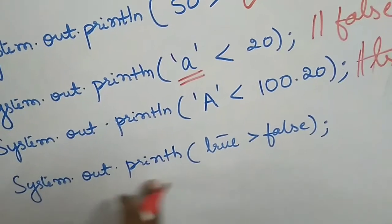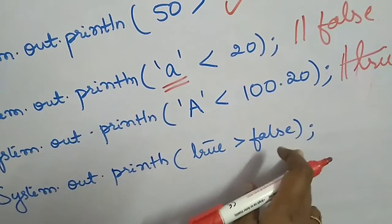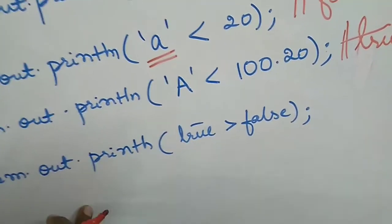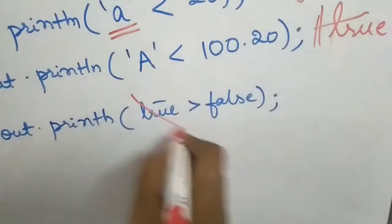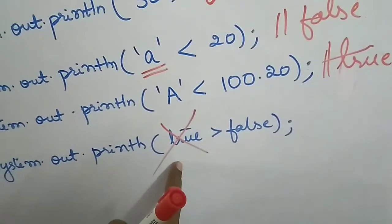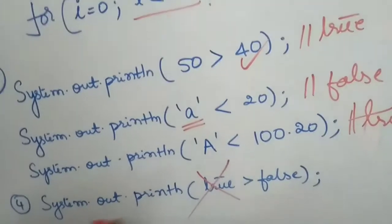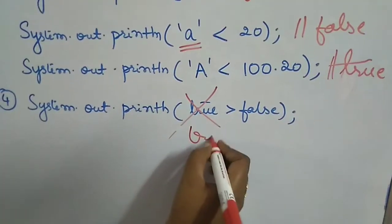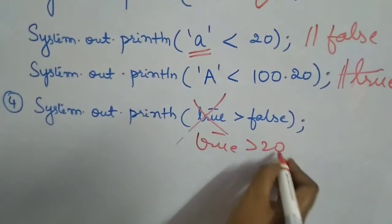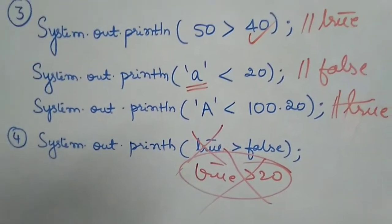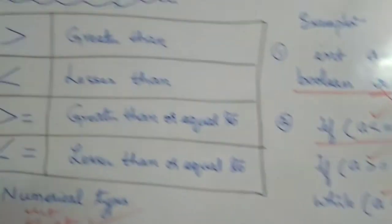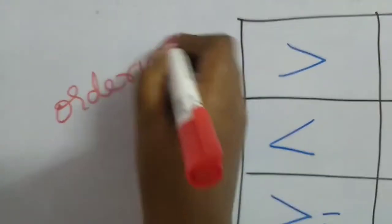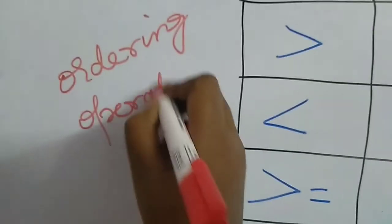System.out.println(true > false) — pause and guess the output. This will not execute, because relational operators cannot be applied on boolean types. Similarly, I cannot say true > 20 — that is not possible. Also, relational operators are also called ordering operators.